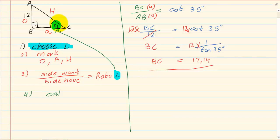So you are going to choose your angle. You are going to mark your O, A and H. You are going to say side you want over side you have. It will give you a ratio. Let's say we want AC. If we want AC, we can now use O or A and we can also simply use Pythagoras because we have a 90 degree triangle.